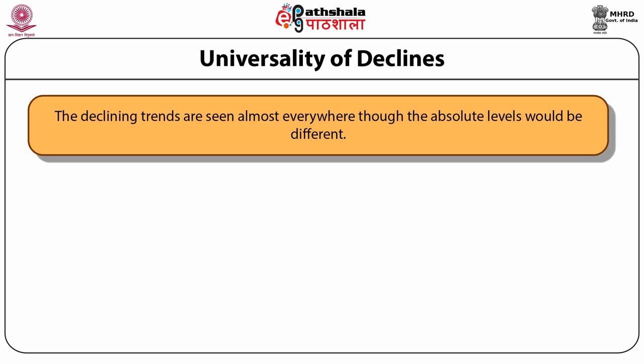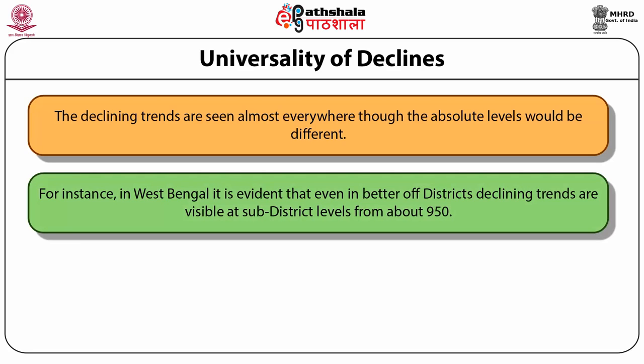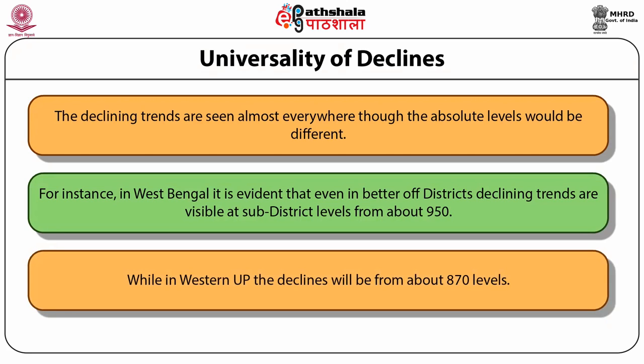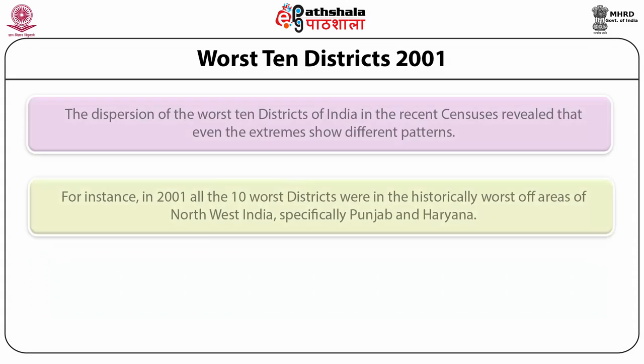In Punjab and Haryana, because ratios had dropped sharply in 2001, we have seen some improvements, while we are finding very steep declines in Jammu and Kashmir. In West Bengal, at the district level there are some changes, but at the sub-district level we are seeing much sharper declines. Western UP shows levels between 820 to 870 in the most severely affected areas, while in eastern UP even the better-off areas are also dropping.